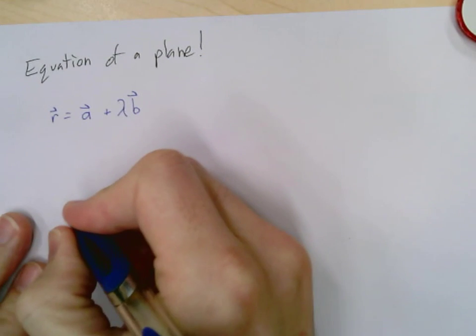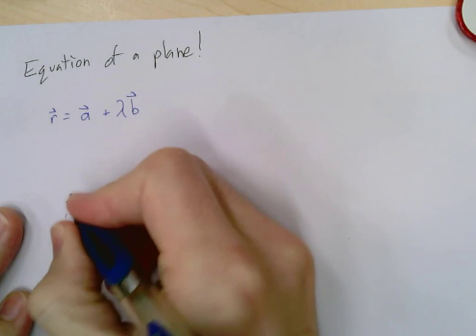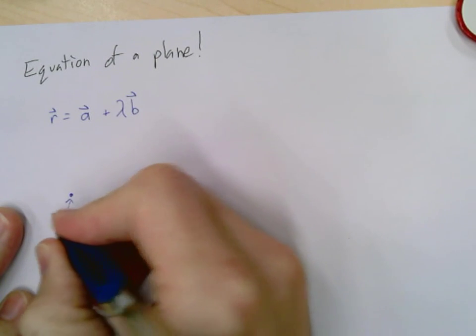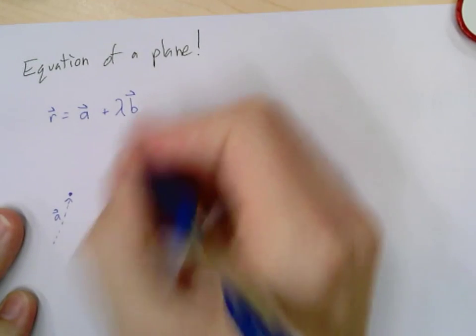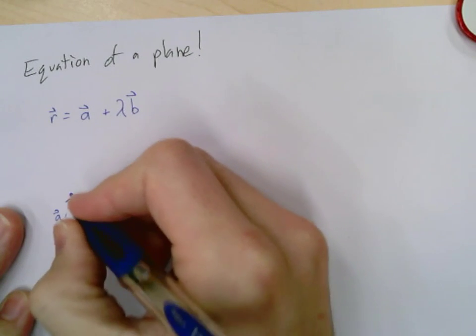The point of that was it gave us our initial point from zero, which was our vector a, and then from there I added vector B as many times as I wanted to, as big or small as I wanted to.